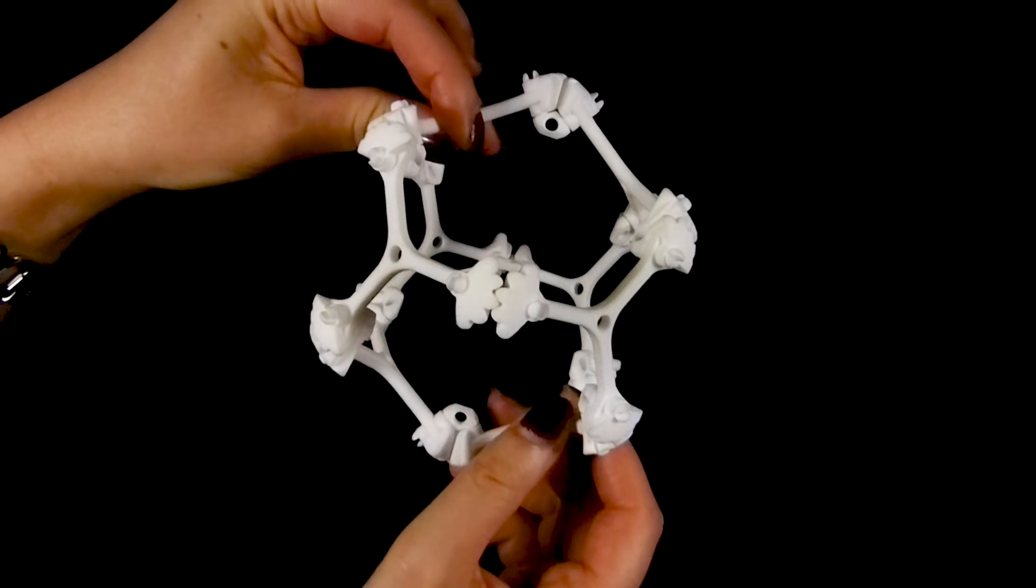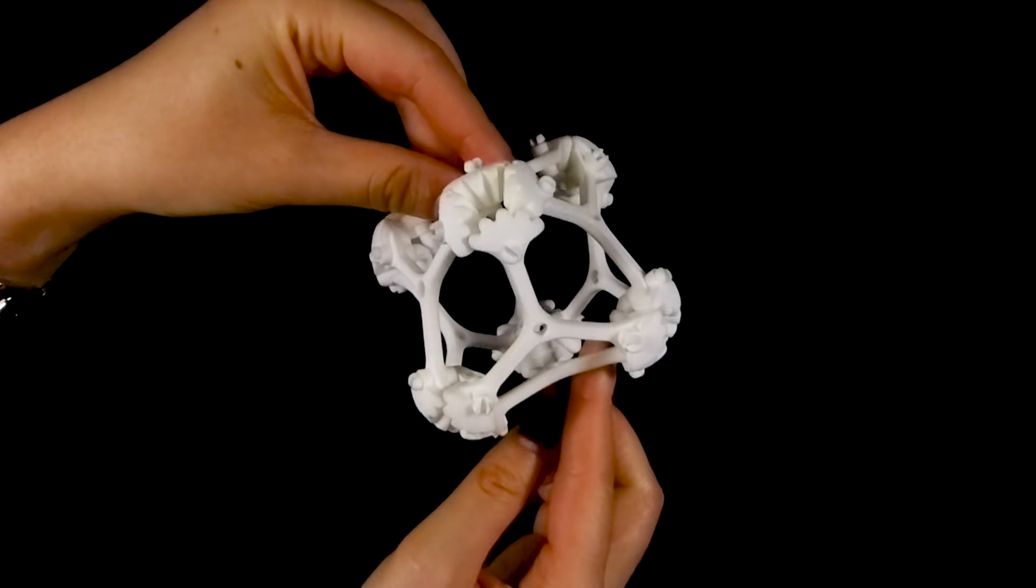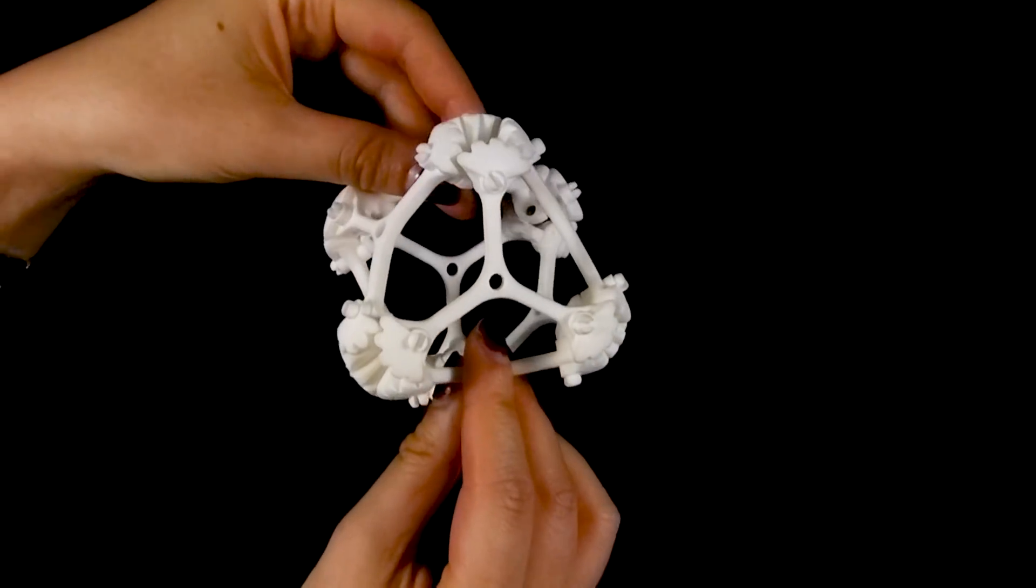Geared Jitterbug is based on the One Degree of Freedom Jitterbug mechanism by Buckminster Fuller. This mechanism converts an octahedron into a cube octahedron.